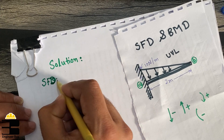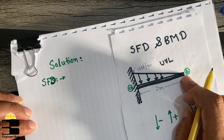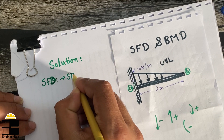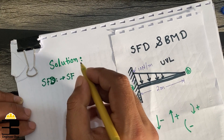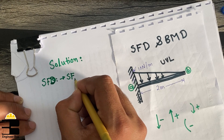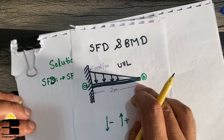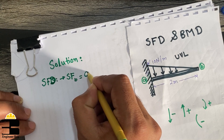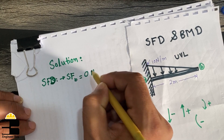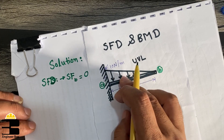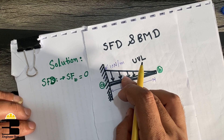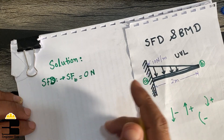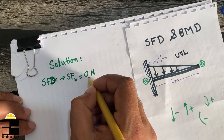I'll be determining the shear force at point B. Remember, the shear force at the free end of a cantilever beam is zero because there is no force there. As you can see, this triangular portion represents the UVL, but at the free end it tapers to a point, so we have zero load. Therefore, shear force at B equals zero Newtons.